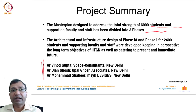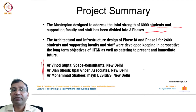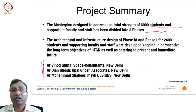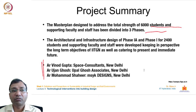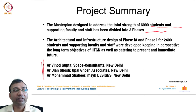The master plan is designed to address a total strength of approximately 6000 students and supporting faculty and staff, divided into three phases. The architectural and infrastructure design of Phase 1A and Phase 1 for 2400 students were developed keeping in perspective the long-term objectives of IIT Gandhinagar. The chief architects involved are from three different consultancies: Architect Vinod Gupta from Space Consultants New Delhi, Architect Ujjan Ghosh from Uppal Ghosh Associates New Delhi, and Architect Muhammad Shaheer from MSYK Designs New Delhi.